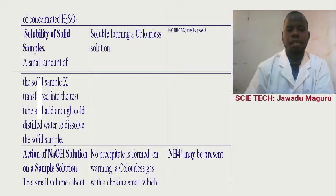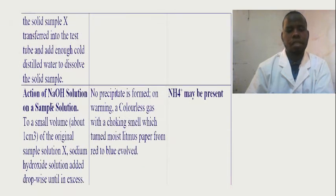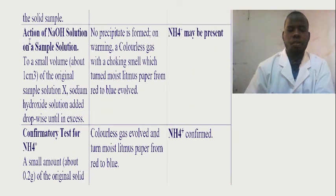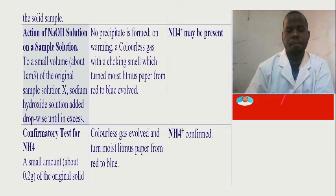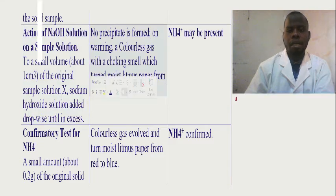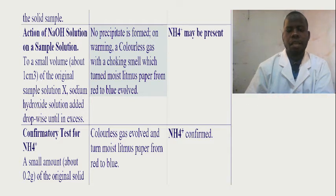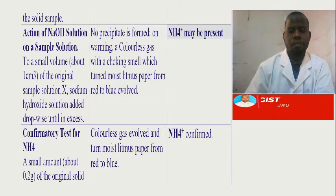Another action is the action of sodium hydroxide solution — that is in the case of testing in solution. You have to perform the experiment as you see in the sentence, and write it in passive voice or reported speech. The observation: no precipitate is formed, only warming, and colorless gas is evolved, which turns litmus paper from red to blue. The inference: ammonia ion may be present.